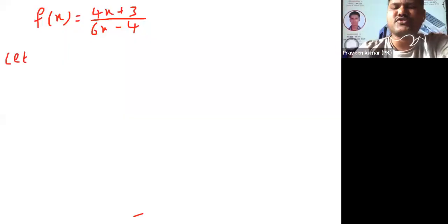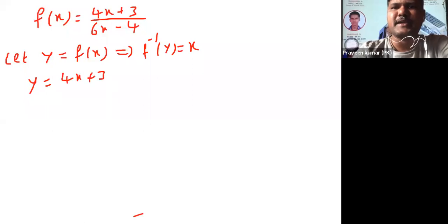Whenever if you want to find the inverse, you can follow this procedure. Like y is equal to f of x, that implies f inverse of y is equal to x. y is equal... what is f(x) value? 4x plus 3 by 6x minus 4. Cross multiply.